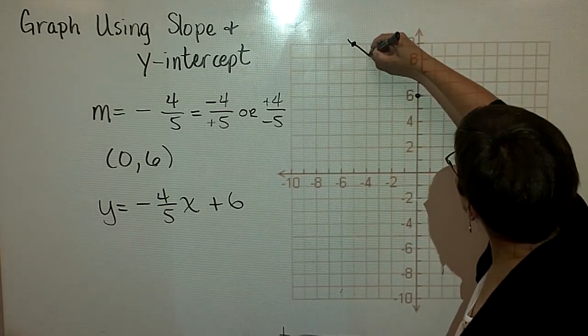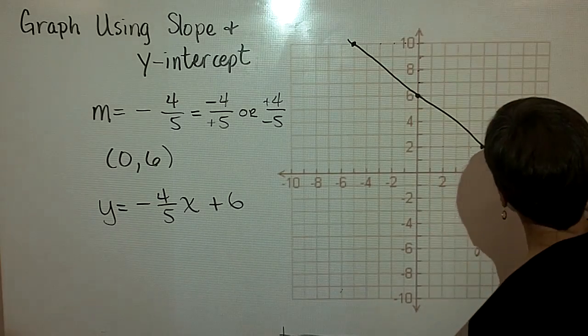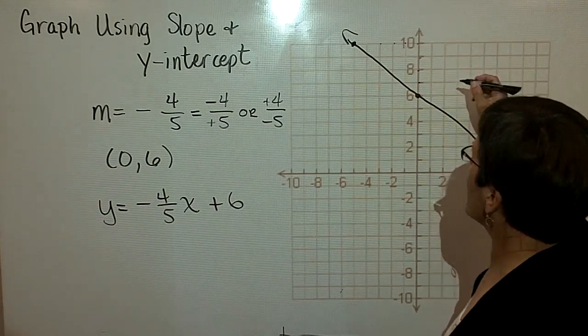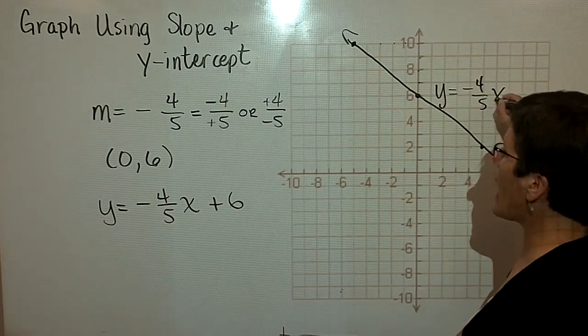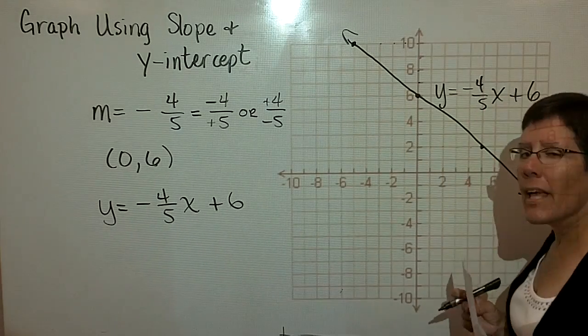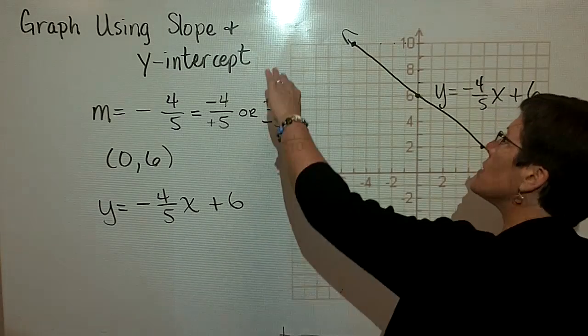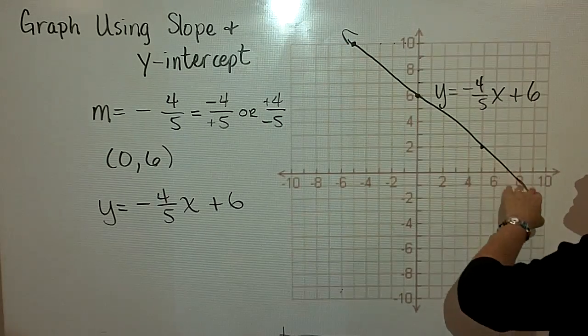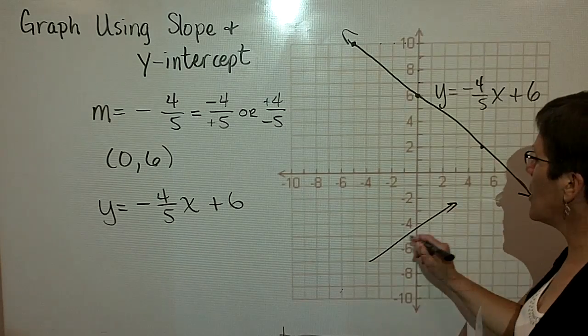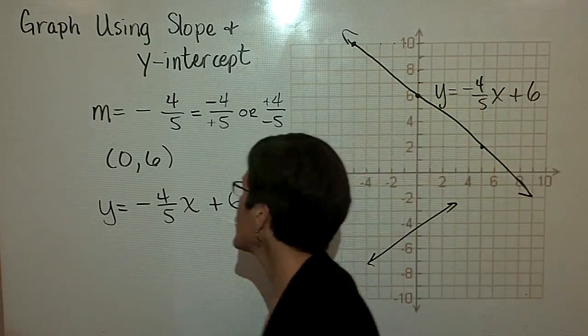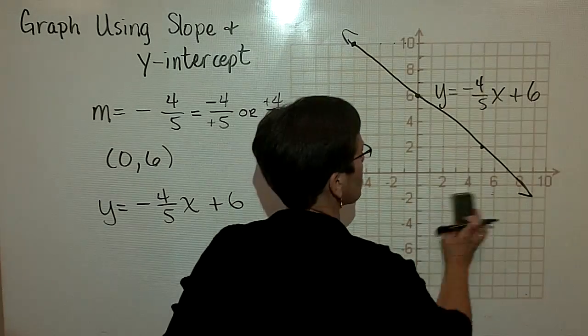I see here that this line goes through all three of those ordered pairs, and I have graphed the line where y = -(4/5)x + 6. I haven't mentioned it yet, but I hope that you notice that a negatively sloping line looks like this, and a positively sloping line is one that goes like that. Let's do another problem where I give it to you in slope-intercept form.